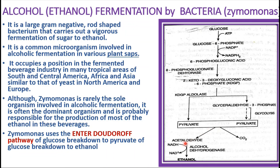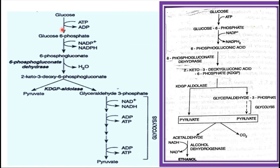In this picture showing the ED pathway, the enzyme KDPG aldolase splits the intermediate, producing pyruvate directly and glyceraldehyde-3-phosphate, which re-enters glycolysis to give rise to more pyruvate. This pyruvate, in the presence of decarboxylase enzyme, gives rise to acetaldehyde and carbon dioxide, finally resulting in the formation of ethanol. This is all about alcohol or ethanol fermentation carried out by yeast as well as the Zymomonas bacteria.